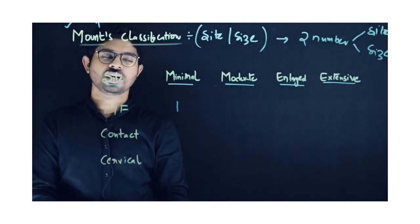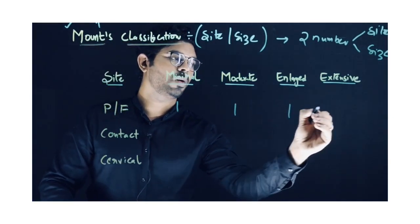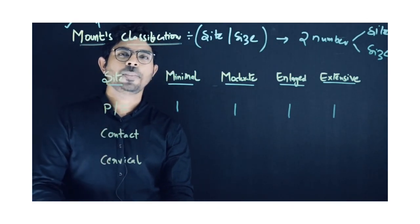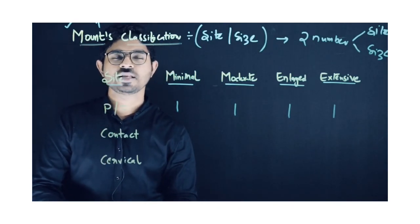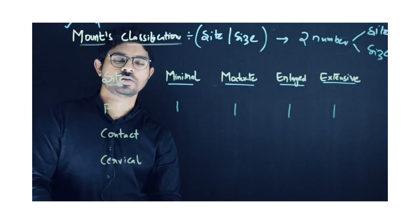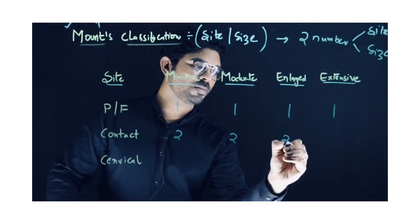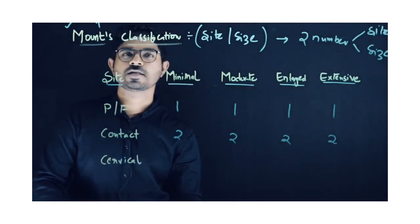1 is pit and fissure. So 1 in the first number represents pit and fissure caries, which is on the occlusal surface. Number 2 represents proximal caries or contact caries which is present on